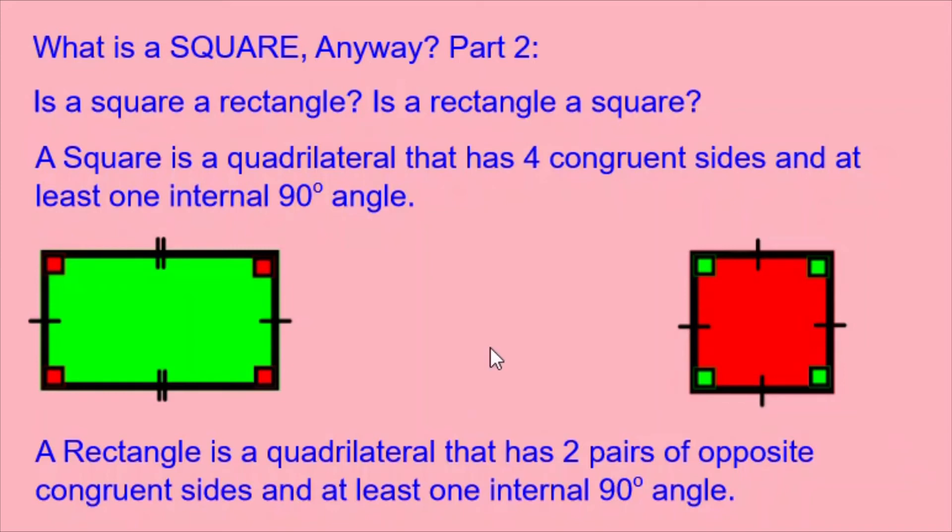Therefore, a rectangle is not necessarily a square. Because it doesn't necessarily have to have four congruent sides.